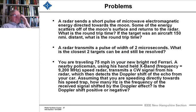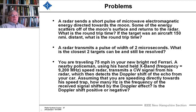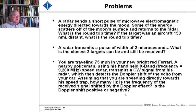We're going to have problems for every lecture, even this introduction. These are a couple of simple problems you ought to be able to figure out yourself. I like the last one — I'll read it to you: you're going 75 miles an hour in your new bright red Ferrari. The state trooper uses his handheld X-band speed radar, clocks you. Assume you're going 75 miles an hour toward his direction and it's an X-band radar at 9,200 MHz — how many hertz is the frequency shifted by the Doppler effect, and is it positive or negative? The others are simple problems to start you off. Believe me, the ones coming up won't be.